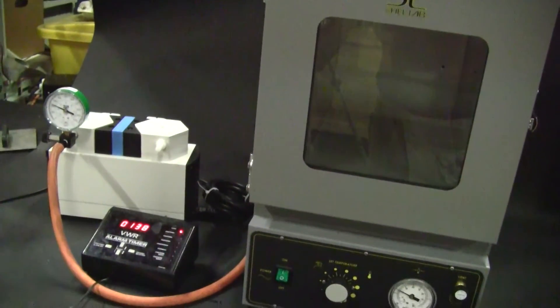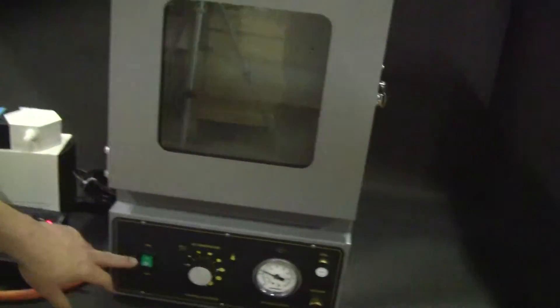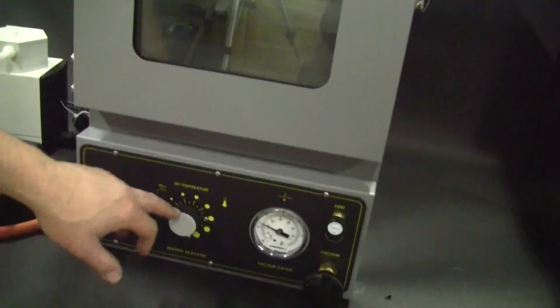Just to review this simple vacuum oven as we come down to 200 millibars: power on-off, set temperature, gauge, vent, vacuum inlet.